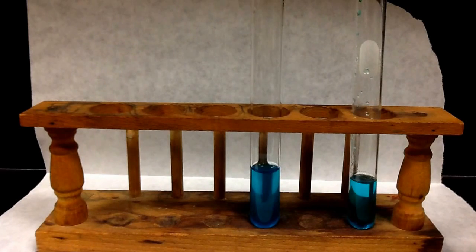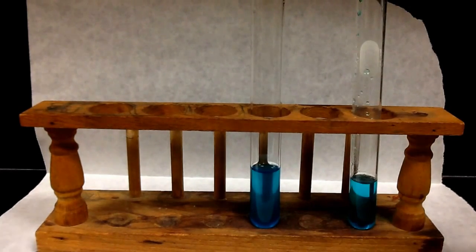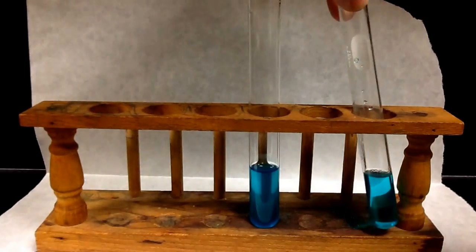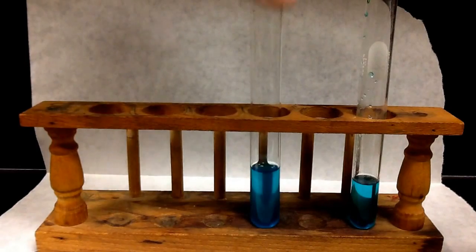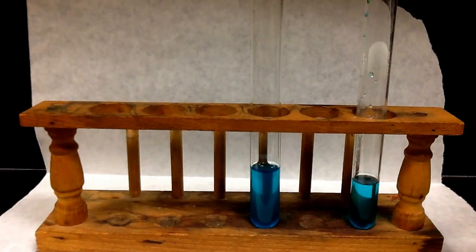So you can see in both these test tubes we've got a copper chloride solution. Hopefully you can tell that it's kind of a green-blue color. And so I'm going to have the test tube on the right as a reference to what the color looks like beforehand.